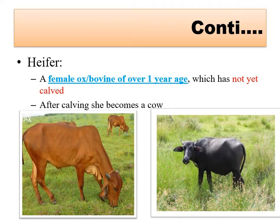Once the calving is done or it delivers a young one for the first time, it becomes an adult. If it is of the cow class then it is called a cow, and if it is of the buffalo class then it is called a buffalo.